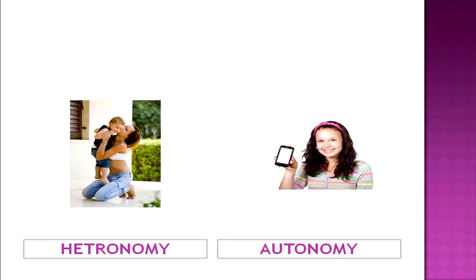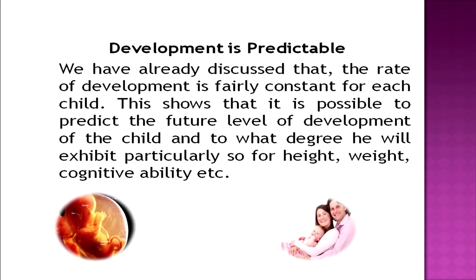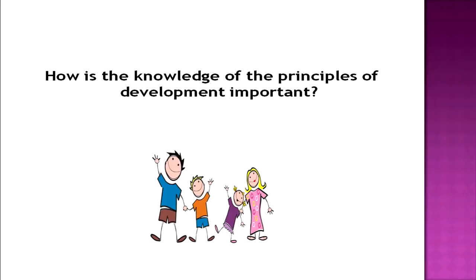As the child grows up and becomes an adolescent, he or she becomes independent enough to fulfill their own needs. The next principle is that development is predictable. Since the rate of development is fairly constant for each child, it is possible to predict the future level of development — particularly for height, weight, cognitive ability, and so on. From today's development pattern of the child, we can predict the development pattern for his or her whole life.